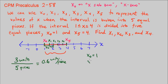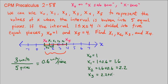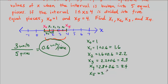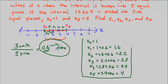So if x sub 0 is 1, x sub 1 is 1 plus 0.6, which is 1.6. x sub 2 is the one before it plus 0.6, which is 2.2. x sub 3 is 2.2 plus 0.6, which is 2.8. x sub 4 is 2.8 plus 0.6, which is 3.4. And x sub 5, which we know should be 4, is 3.4 plus 0.6, which is 4. So this is all correct, making each piece 0.6 units in length. These are how we label these to make them equal in length.